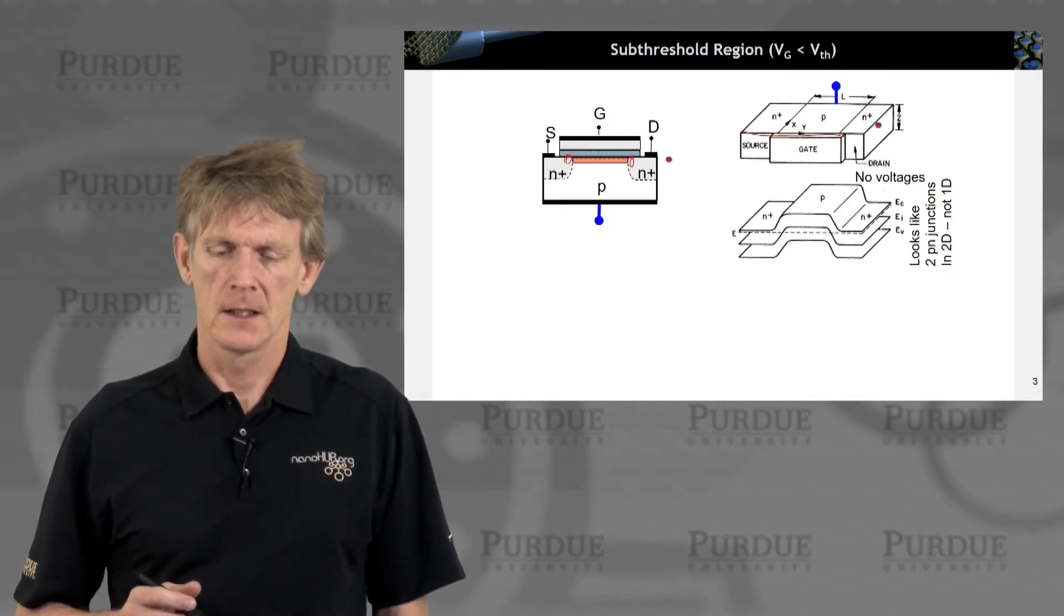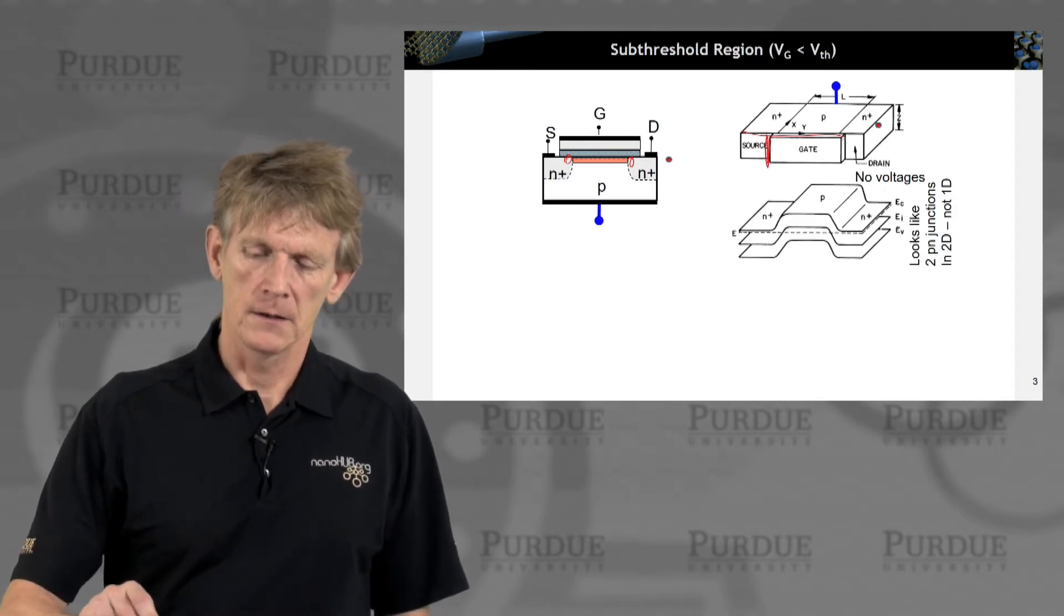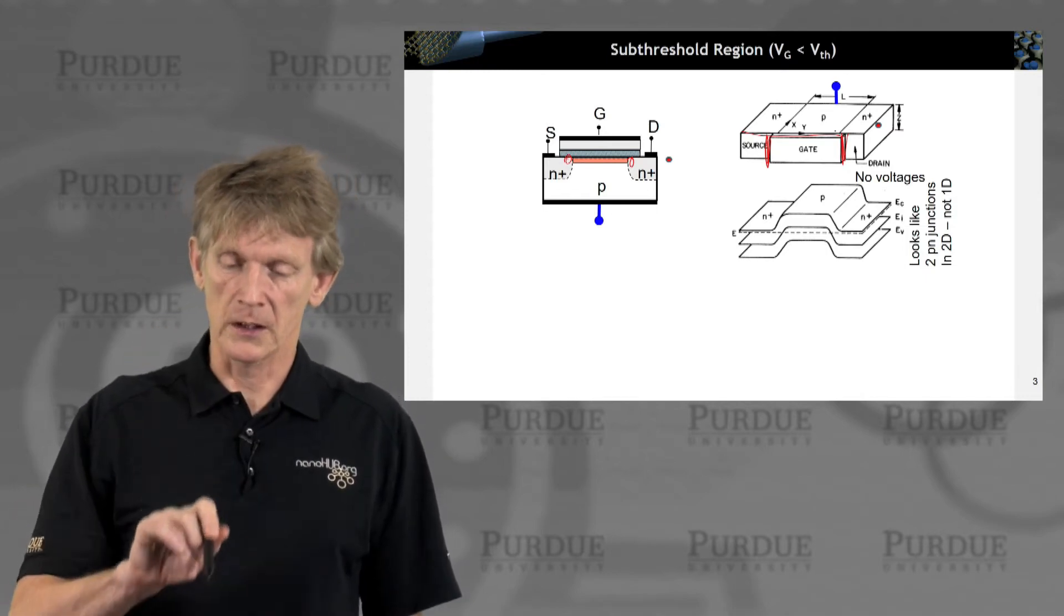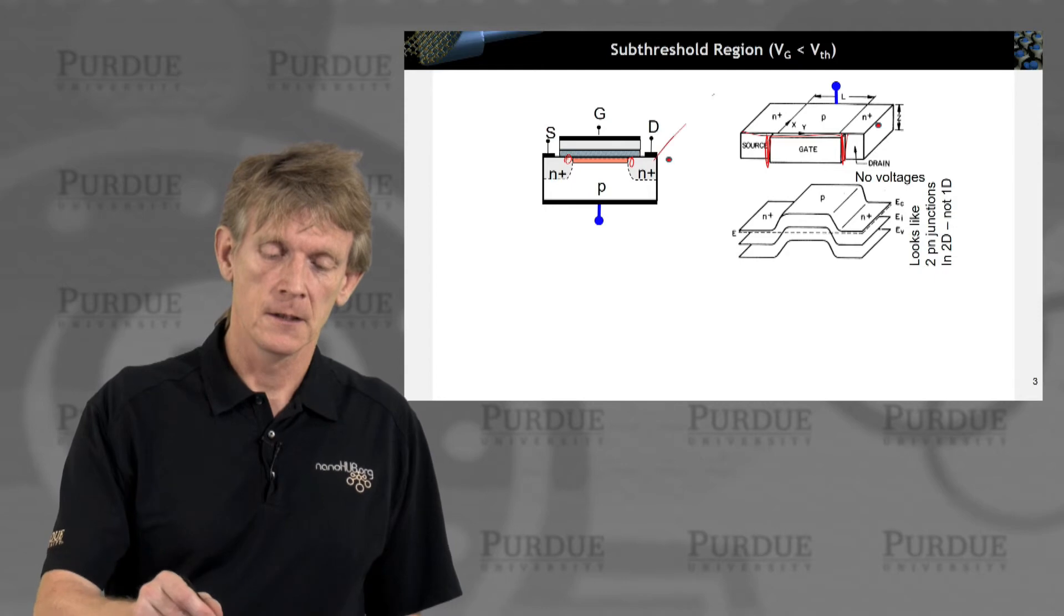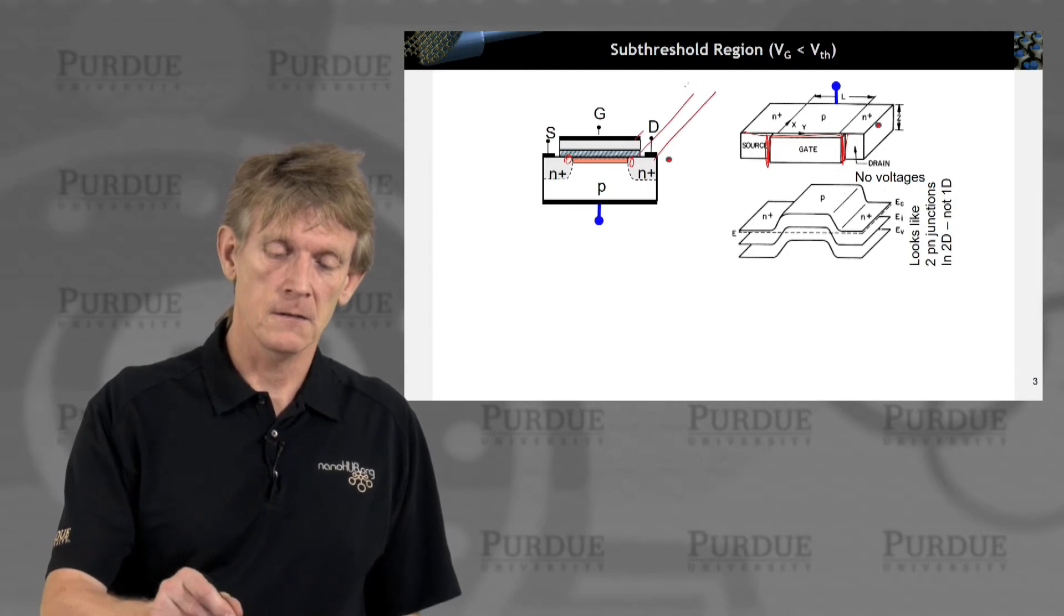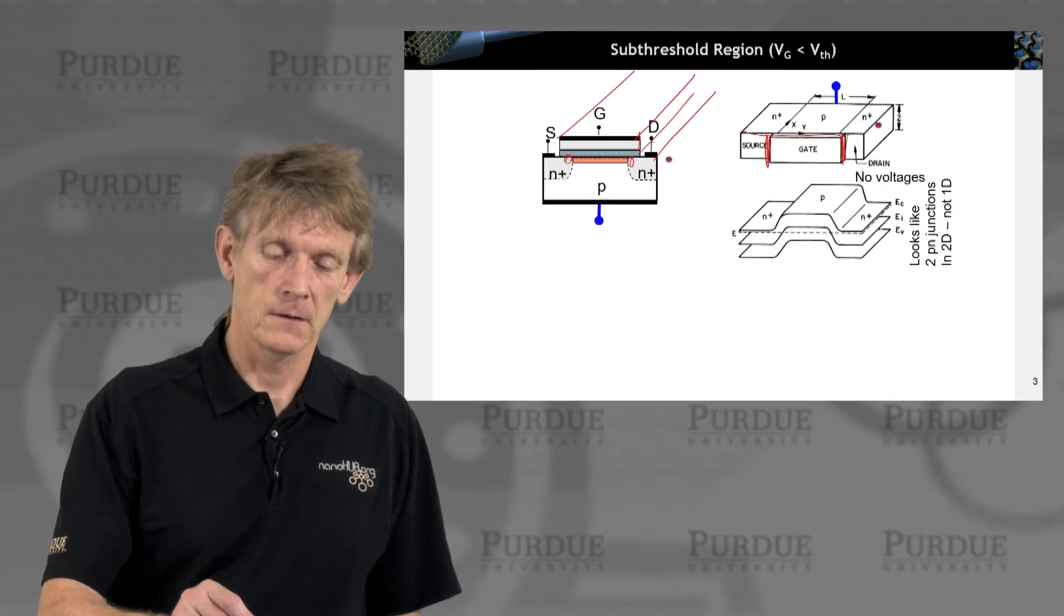So this device, we talk about the width of this transistor, so we're looking down into the depth. So we're looking down from here. If you did this in 3D, the device would look like this.